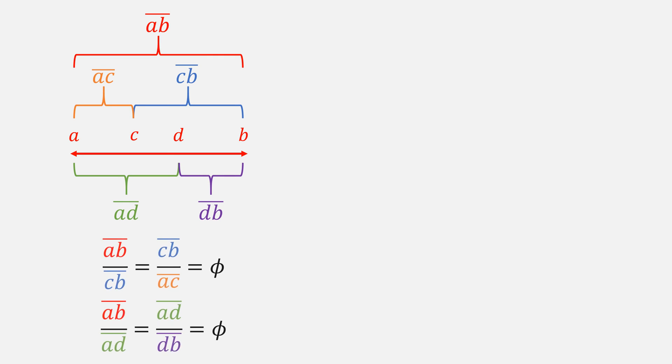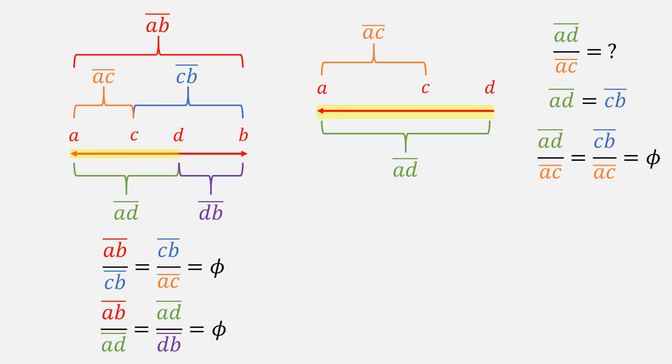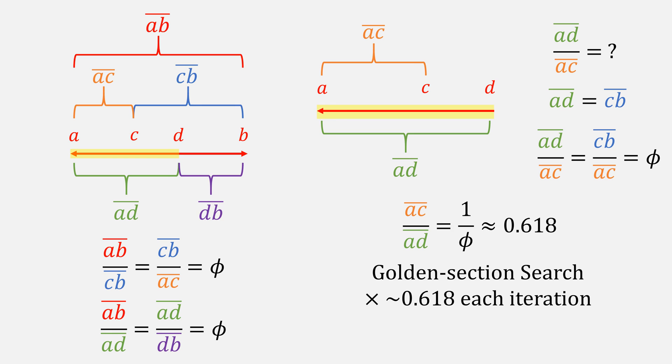But how much is our interval being shrunk by every iteration? If we label our chords like this, knowing that the ratios are all equal to the golden ratio, let's look at the left side. What is this ratio equal to? Well, we know that AD is equal to CB. Therefore, plugging that in, we get the golden ratio again. What if we invert that ratio? This gives us 1 over the golden ratio equal to 0.618. This means that the golden section search reduces our search base by 0.618 each iteration. Meanwhile, ternary reduces it by 2 thirds.